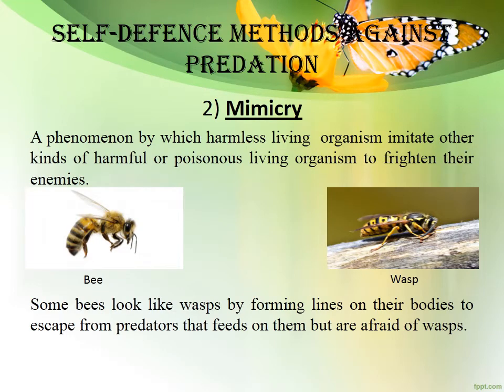The second way is mimicry — a phenomenon by which harmless living organisms imitate harmful ones. For example, the bee looks like a wasp to escape from predators.